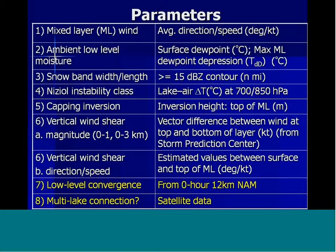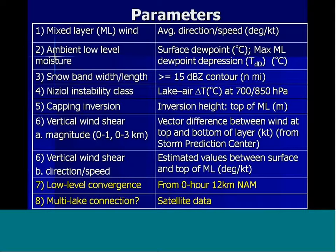This is a cross section of the atmospheric parameters — a lot based on forecast experience, some on prior write-ups — that we had a reasonable idea had a fair influence on the inland extent of lake effect snow bands. We looked at a lot of wind flow parameters in the mixed layer. Common conventional thinking is that stronger flow environments would promote greater inland extent. We wanted parameters to show how moist the mixed layer environment is. We looked at things like the width and length of the snow bands, some stability classes, how high the capping inversion was, some convergence, and we looked for data to indicate if multi-lake influences upstream were effective.